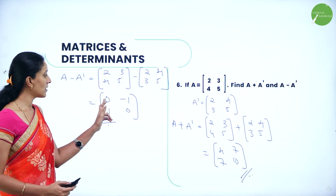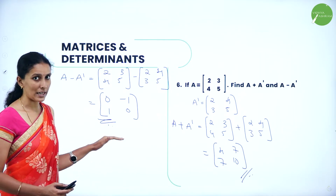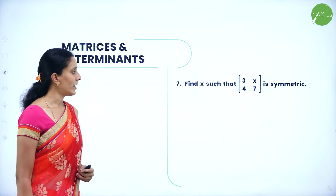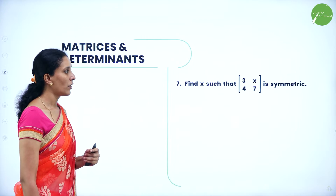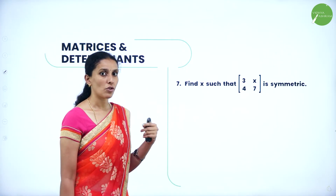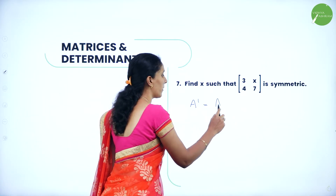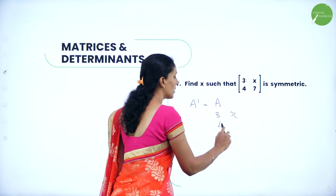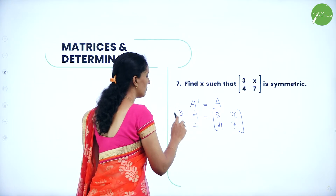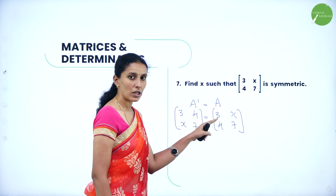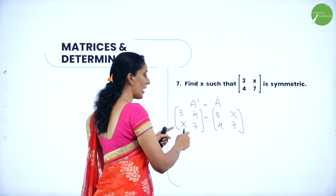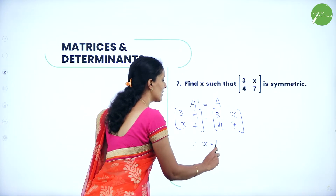So a plus A-dash will always be symmetric, and A minus A-dash will always be a skew-symmetric matrix. Next, find x such that [3, x; 4, 7] is symmetric. For a symmetric matrix, A-dash must equal A. The transpose of [3, x; 4, 7] is [3, 4; x, 7]. Equating corresponding elements: x = 4. Therefore x = 4.